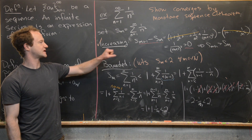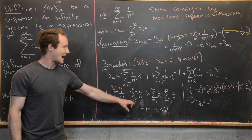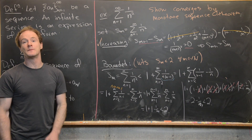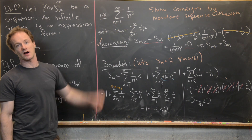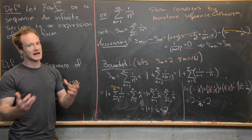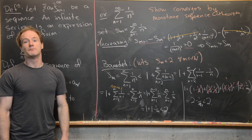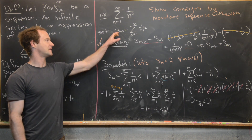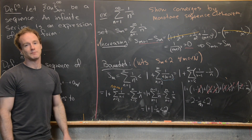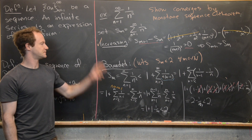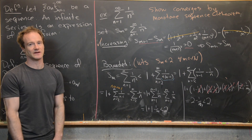So we've shown that the sequence of partial sums is increasing and bounded above by 2. By the monotone sequence theorem, the sequence of partial sums converges — and that's what we mean when we say the series converges. We'll clean this up and look at an example of a divergent series.